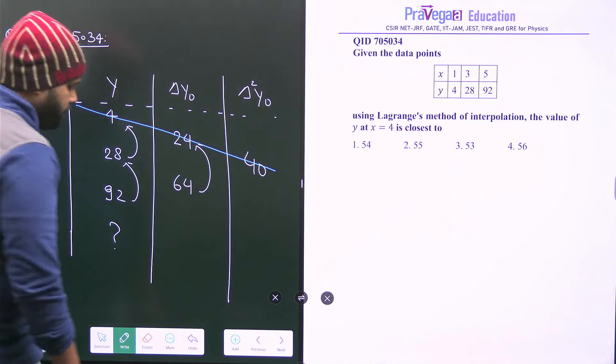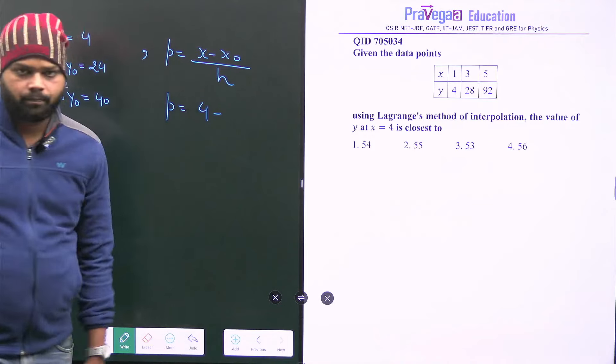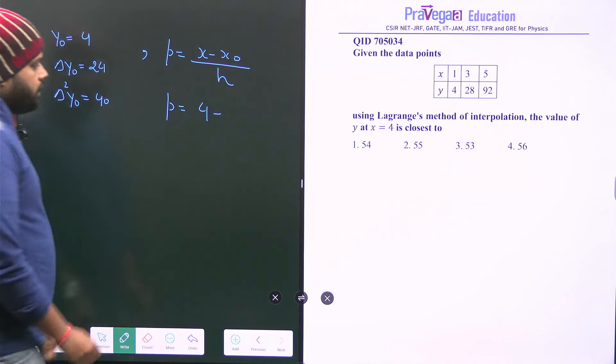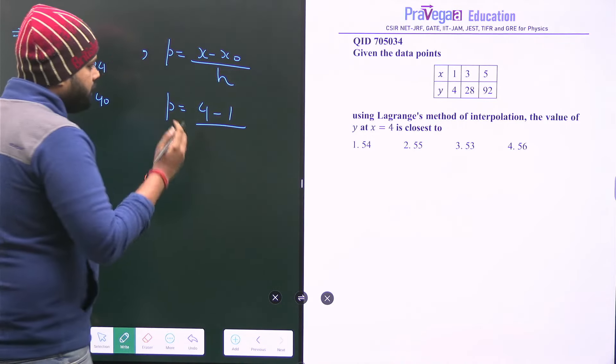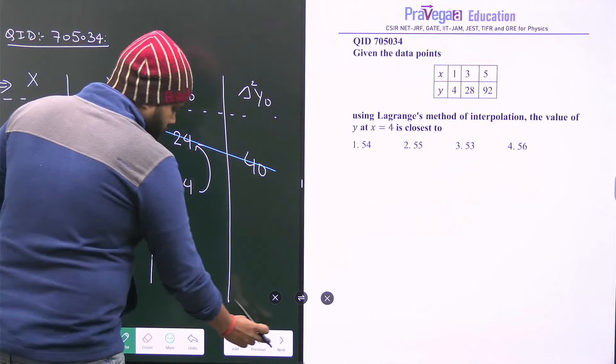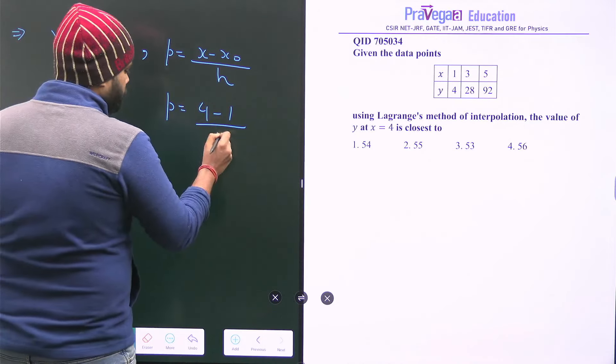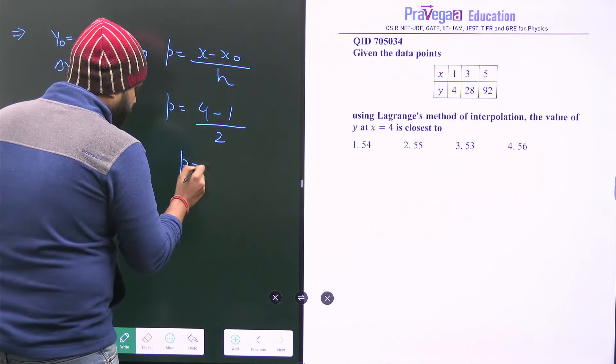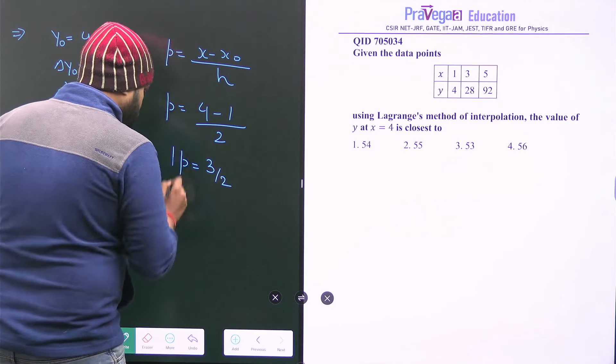x0 means the first value of this table, that is 1. So x0 value will be 1, and h is the step size. So let's look at the table. Step size is 1, 3, 5, that means step size is 2. So h value is 2. So from here we are finding P is equals to 3 by 2.